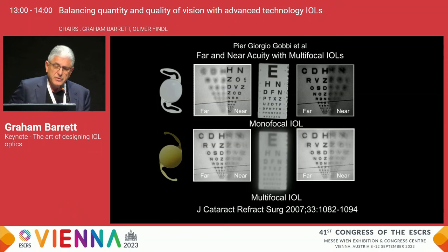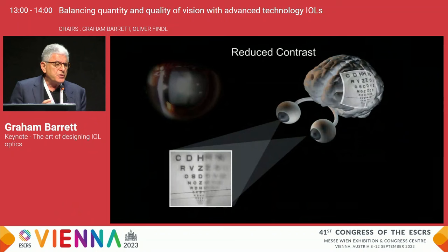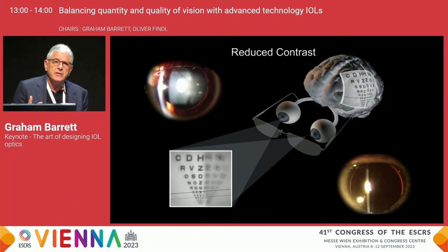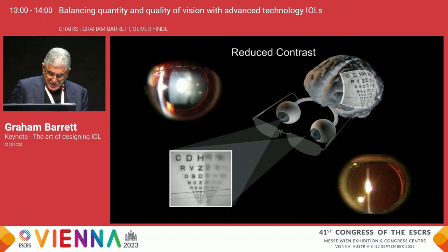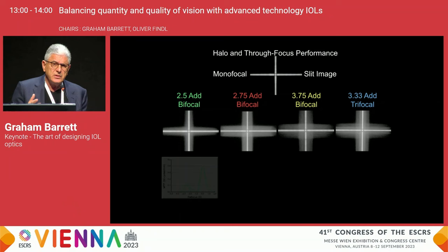How do patients tolerate this reduction in contrast? There is an element of neuroadaptation and monocular suppression. Also, patients usually start off with reduced contrast anyway because they have cataracts or dysfunctional lens syndrome, which improves after cataract surgery. This may explain some of the reasons they accept what is an obvious optical compromise. When we look at the literature, it's clear that diffractive optics are associated with unwanted halo and optical phenomena.